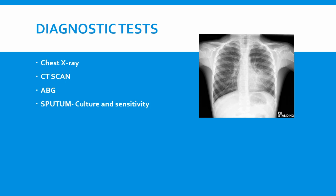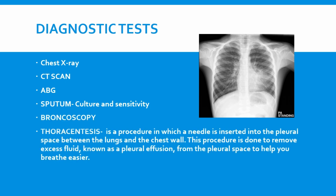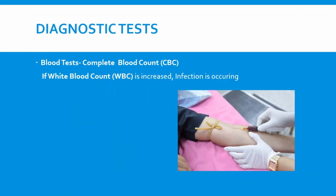We can also take a sputum sample of the patient and perform culture and sensitivity testing. We can also do bronchoscopy and thoracentesis — a procedure in which a needle is inserted into the pleural space between the lungs and the chest wall to remove excess fluid known as pleural effusion, helping the patient breathe easier. Additionally, we can order blood tests such as a CBC — complete blood count — in which an increased number of WBCs indicates that an infection is occurring.